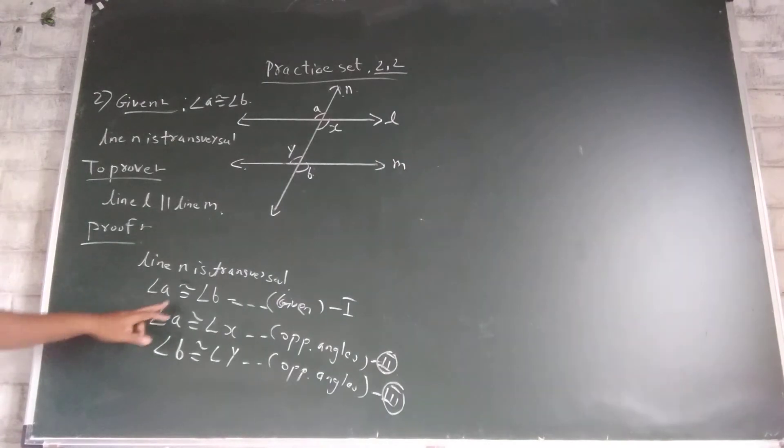Now see, in equation 1, angle A and B are congruent. So from equation 2 and 3, angle X and angle Y are also congruent.